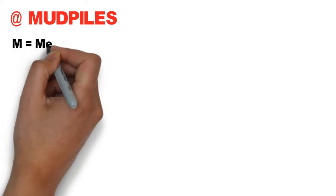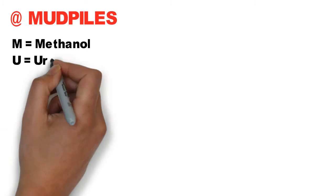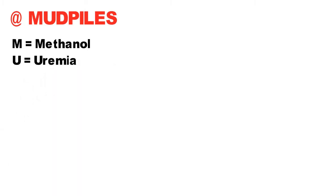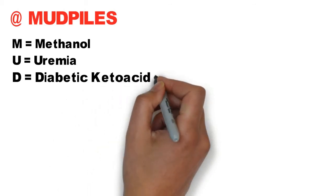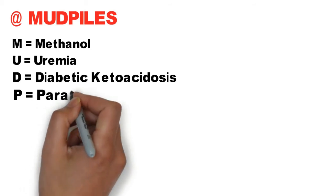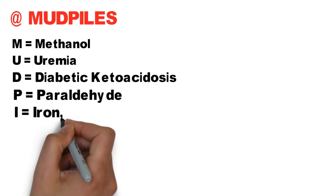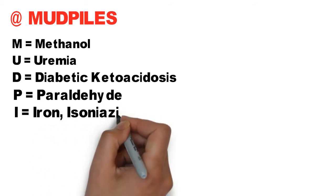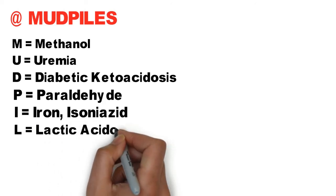The alternate mnemonic is MUDPILES, where M is for methanol, U is for uremia, D is for diabetic ketoacidosis, P is for paraldehyde, I is for iron and isoniazid, and L is for lactic acidosis.